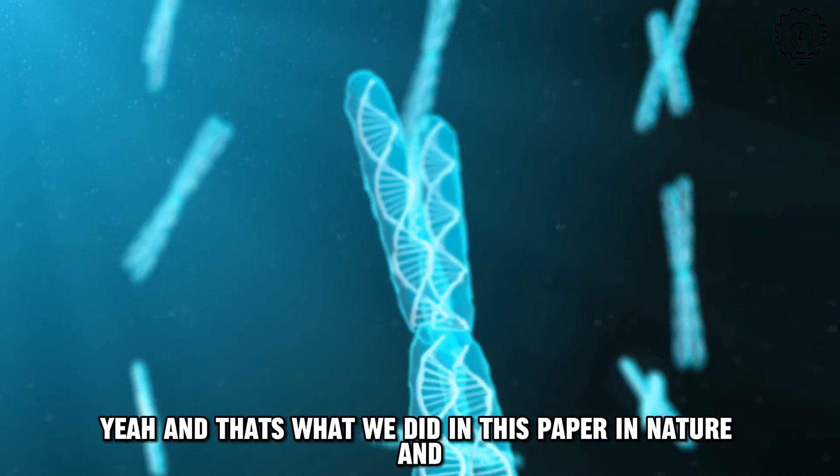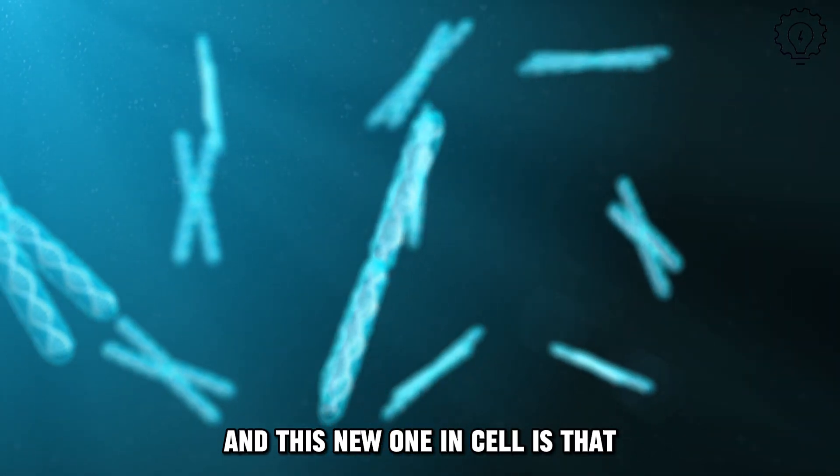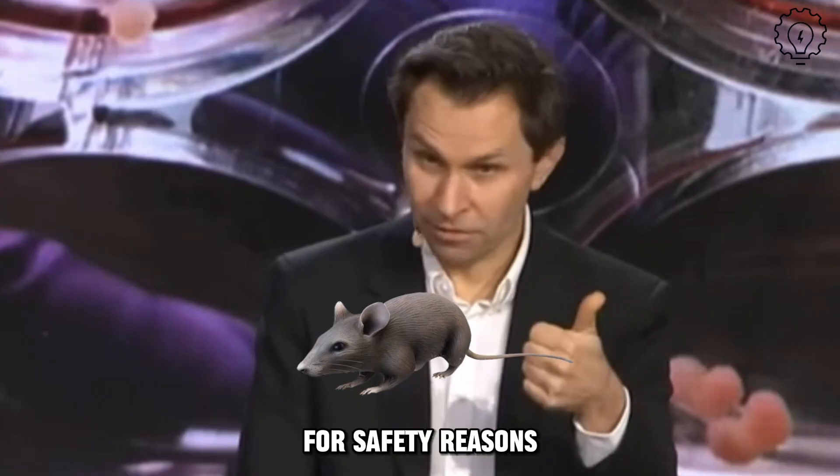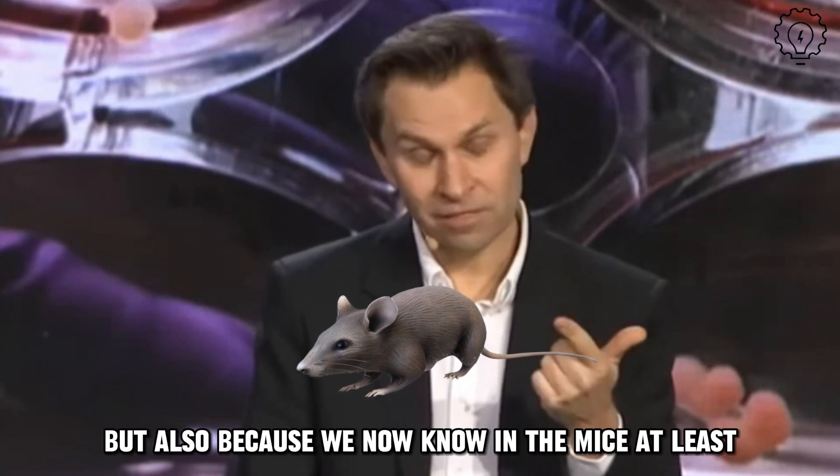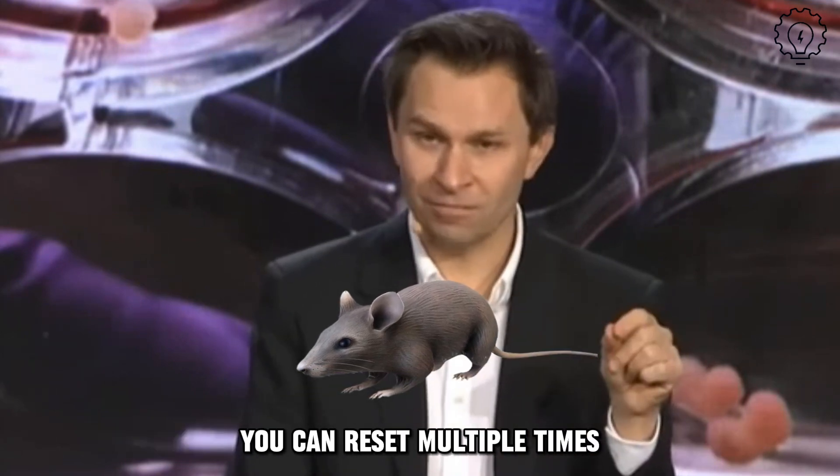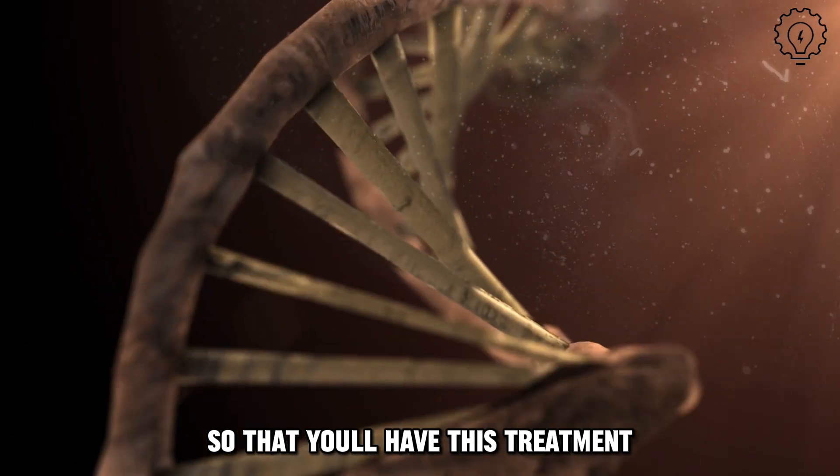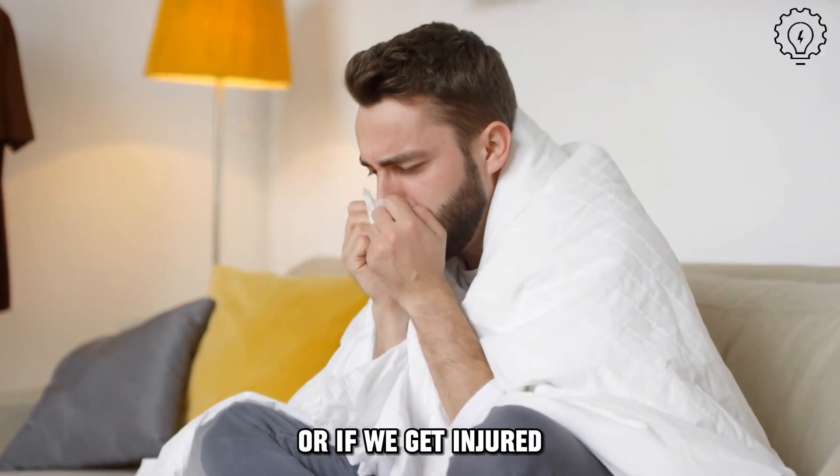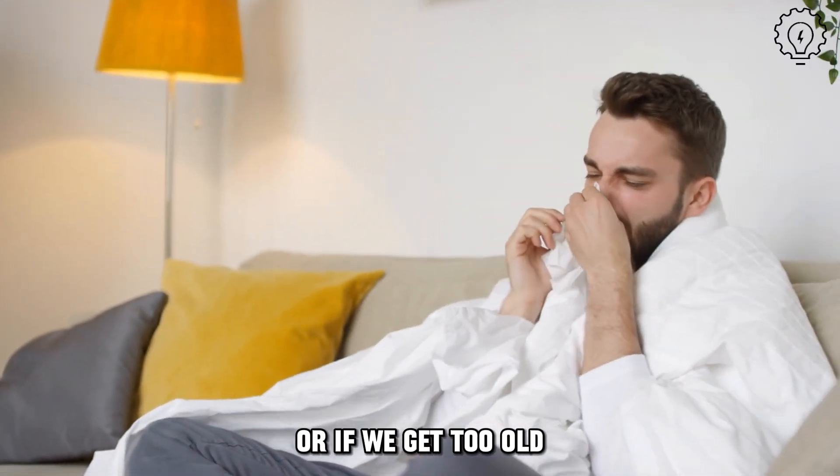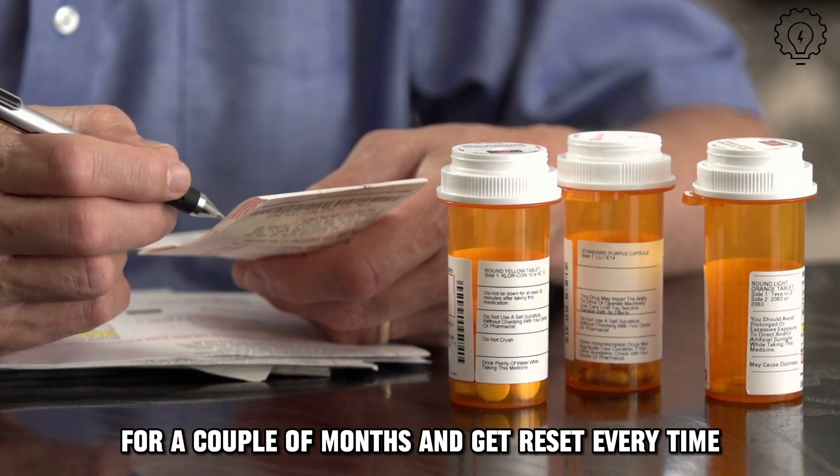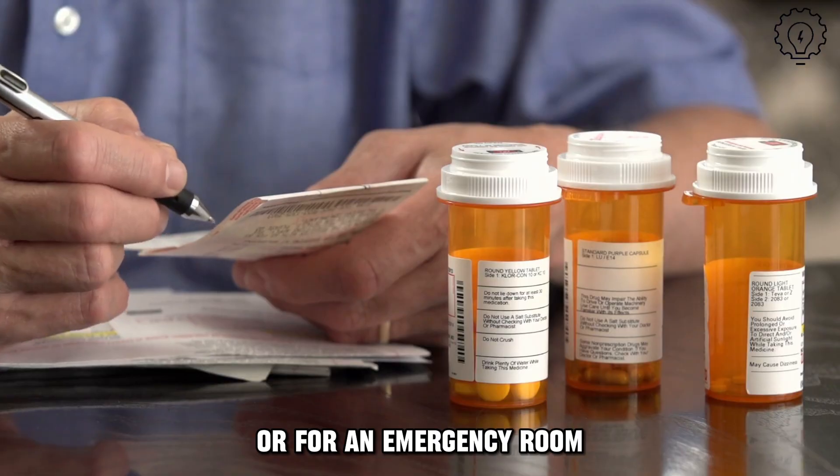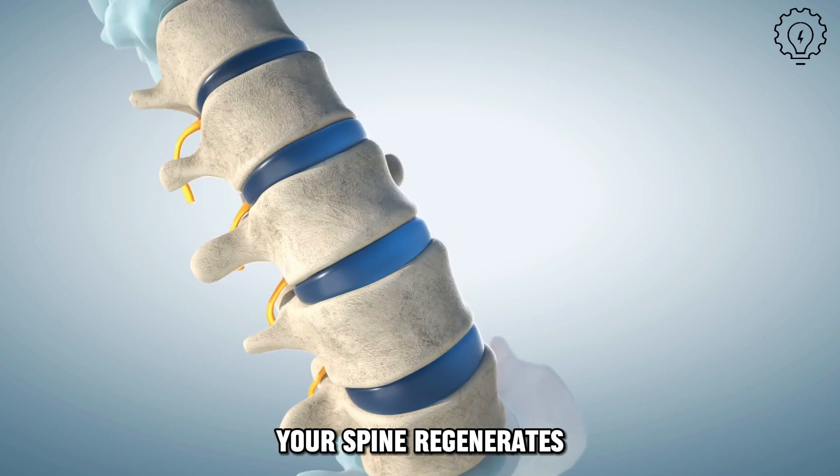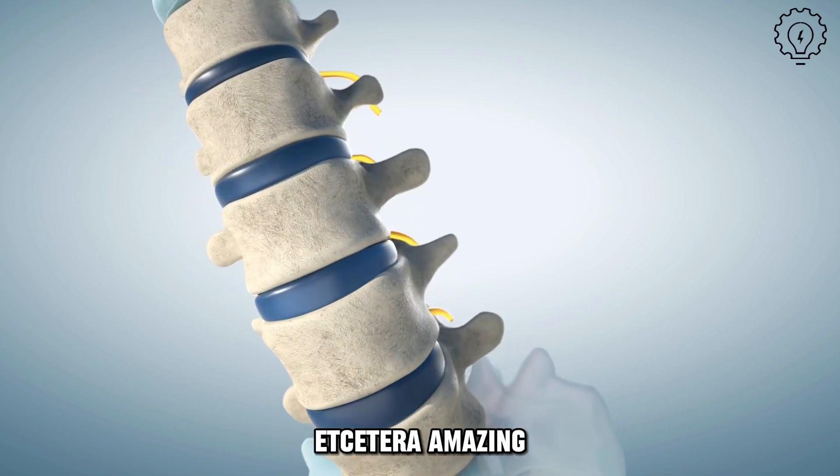And that's what we did in this paper in Nature and this new one in Cell, is that we have exquisite control over when these genes come on for safety reasons, but also because we now know, in the mice at least, you can reset multiple times, so that you'll have this treatment, your body will be filled with these genes, they'll be off, and if we get sick, or if we get injured, or if we get too old, we can take a course of an antibiotic for a couple of months and get reset every time, or if we're in the emergency room, they give you an infusion of doxycycline, on come these repair genes, your nose regrow, your spine regenerates, etc.